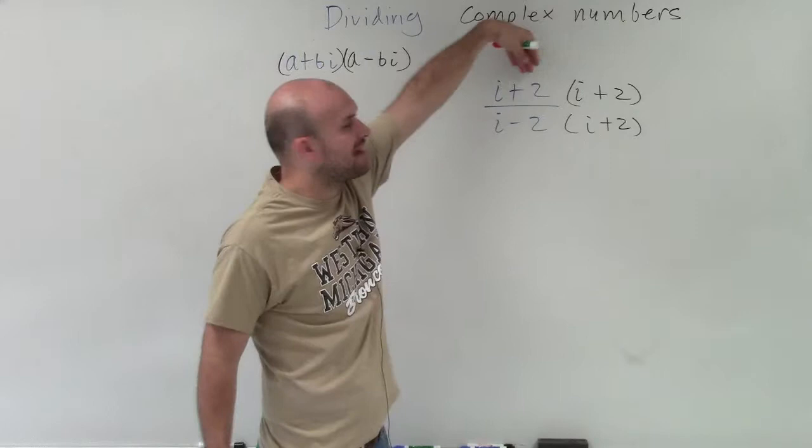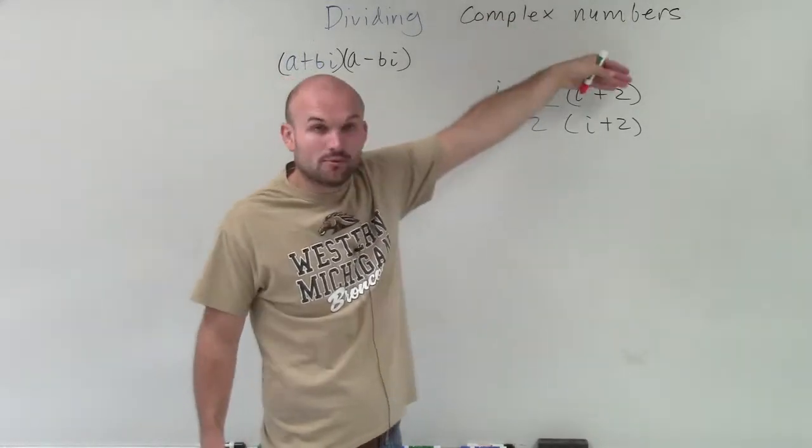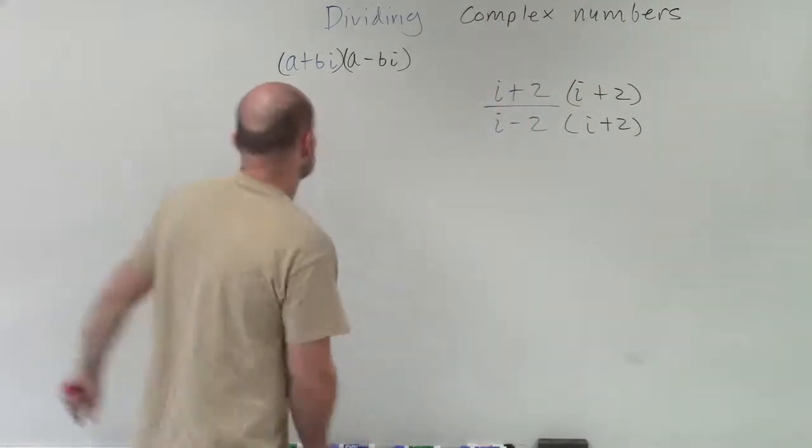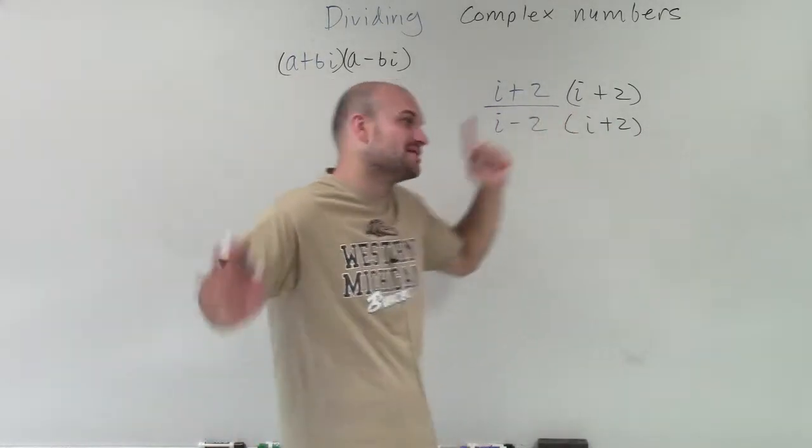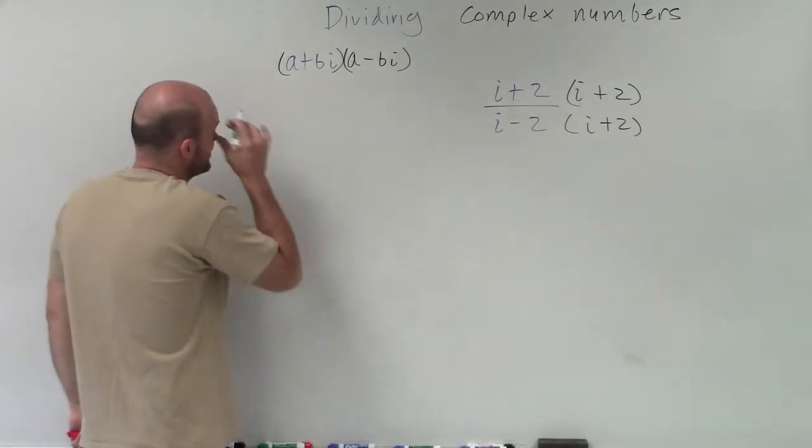Up here, I have a binomial squared. This is the same binomial multiplied by the same binomial. So let's kind of go through our special product. And then down here, we have a difference of two squares. So let's go back through these and take a look at what they are.